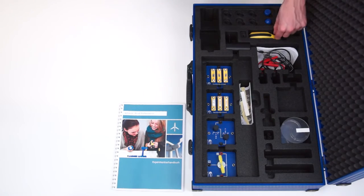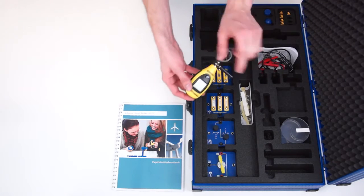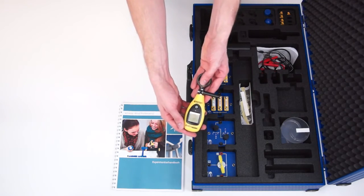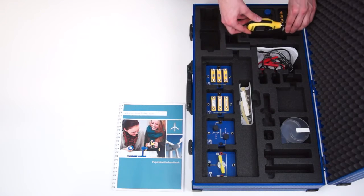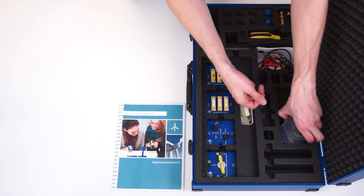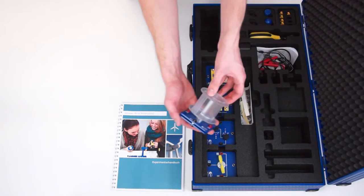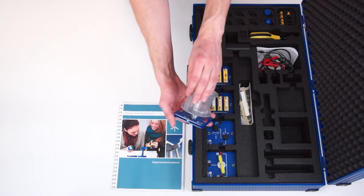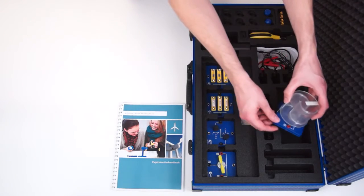Another measuring tool is the anemometer. It allows, for example, to determine the loss of wind speed after flowing past the rotor blades. In addition to the model of a conventional wind turbine, a Savonius rotor is also supplied in the case. It makes it possible to compare the two technologies and to identify advantages and disadvantages.